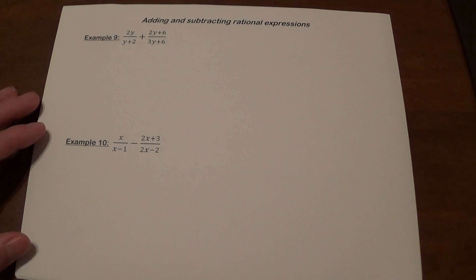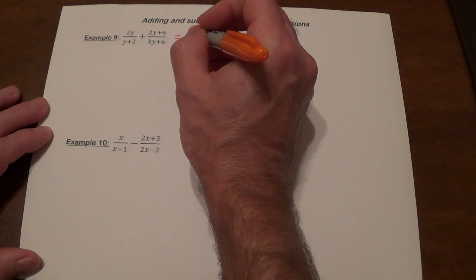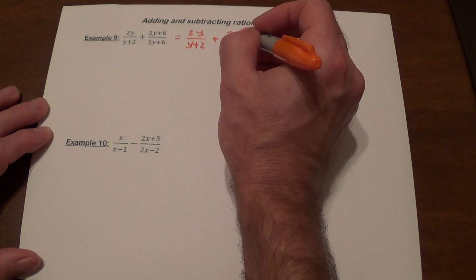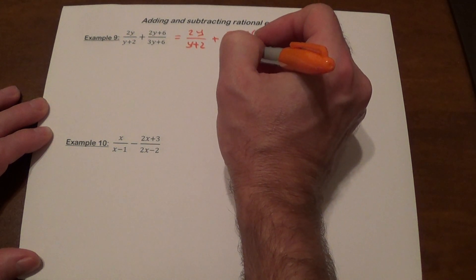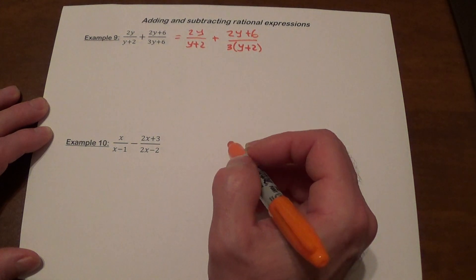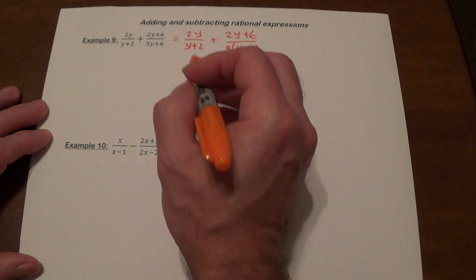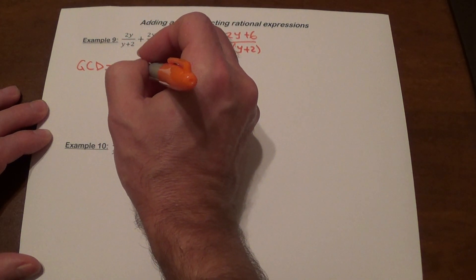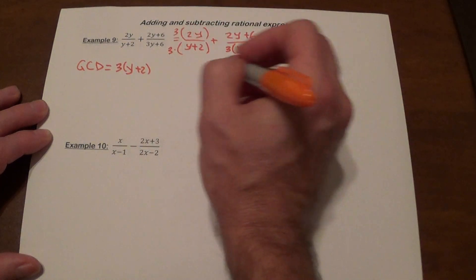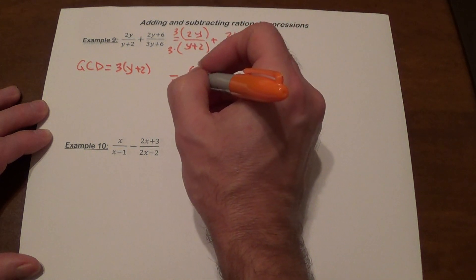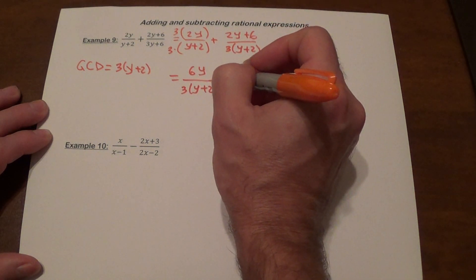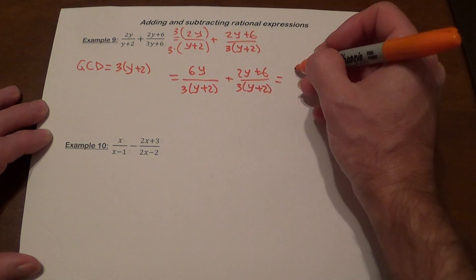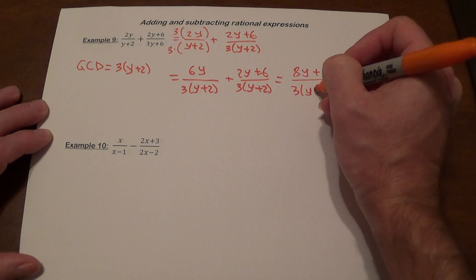What about when the denominators are not as simple? Let's rewrite: we have 2y over y plus 2. In the second denominator, I can factor out 3, and I have y plus 2 as well. So we already have y plus 2 common in both fractions. The only thing missing is the 3, so the greatest common denominator is 3 times y plus 2. Multiplying the first fraction by 3, we get 6y over 3 times y plus 2, plus 2y plus 6 divided by 3 times y plus 2. Combining them: 8y plus 6 divided by 3 times y plus 2.